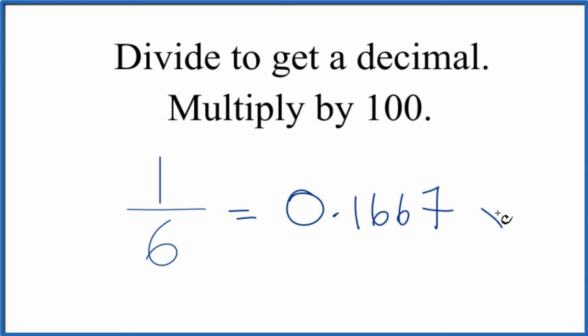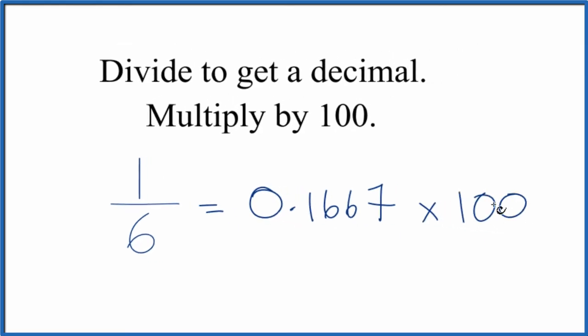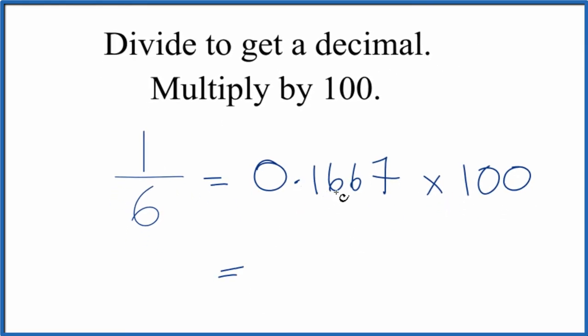Then we're going to multiply that by 100, and we'll have our decimal. So 0.16667 times 100 is 16.67. That's our percent.